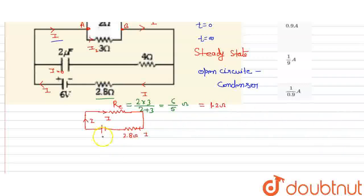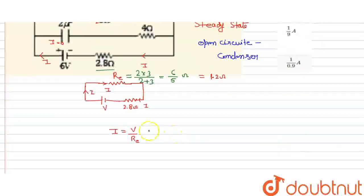The total current I equals V upon R equivalent. The voltage is 6 volts. R equivalent is 1.2 plus 2.8, which is 4 ohms. So current I equals 6 divided by 4, which is 3 by 2 amperes. Now we need to find I1.